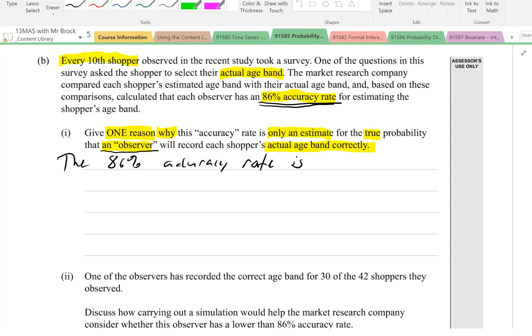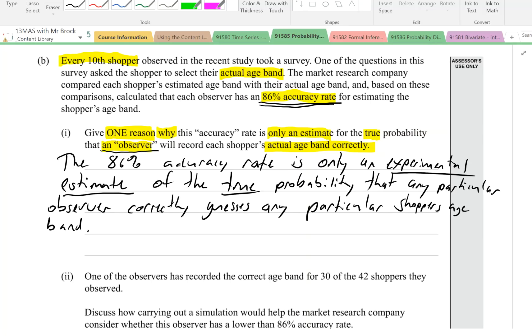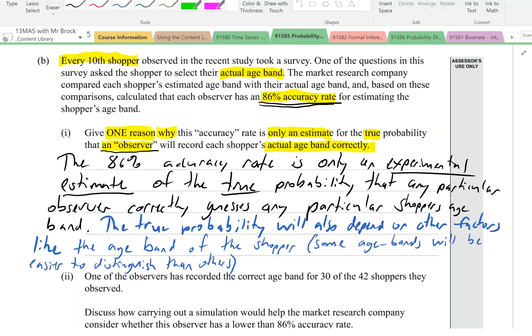The 86% accuracy rate is only an experimental estimate of the true probability that any particular observer correctly guesses any particular shopper's age band. The true probability will also depend on other factors like the age band of the shopper. Some age bands may be easier to identify than others, or to distinguish than others. And that's important. Also the observer, in particular the observer's ability to correctly identify someone's age.